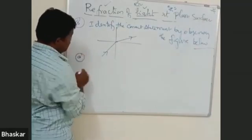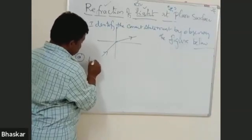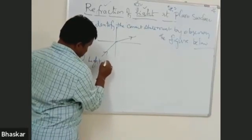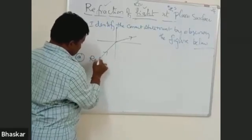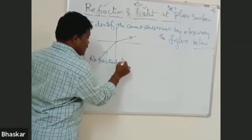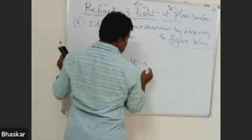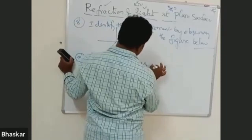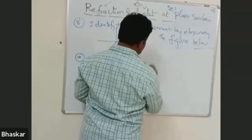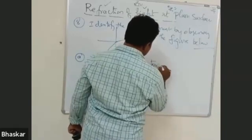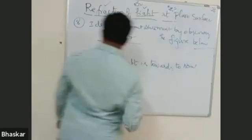Option A, light, I will say, refracted light is going, refracted light is towards the normal.